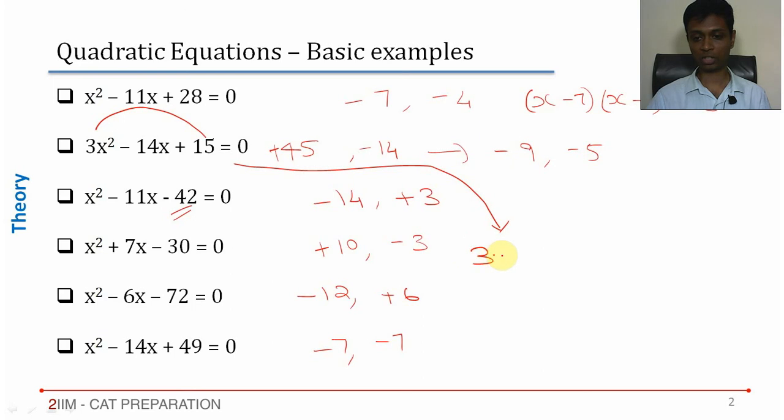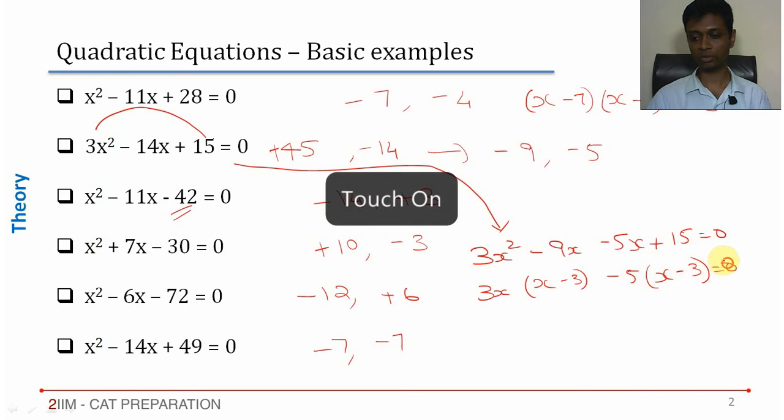I am going to split it as 3x² - 9x - 5x + 15 = 0. Extract 3x from this: 3x(x - 3). Extract -5 from this: -5(x - 3) = 0.